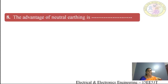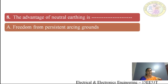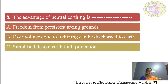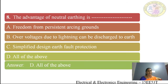Eighth question: the advantage of neutral earthing is — (A) freedom from persistent arcing grounds, (B) over-voltages due to lightning can be discharged to earth, (C) simplified design of earth fault protection, (D) all of the above. The answer is all of the above — freedom from persistent arcing grounds, discharge of lightning over-voltages to earth, and simplified earth fault protection design are all advantages of neutral earthing.